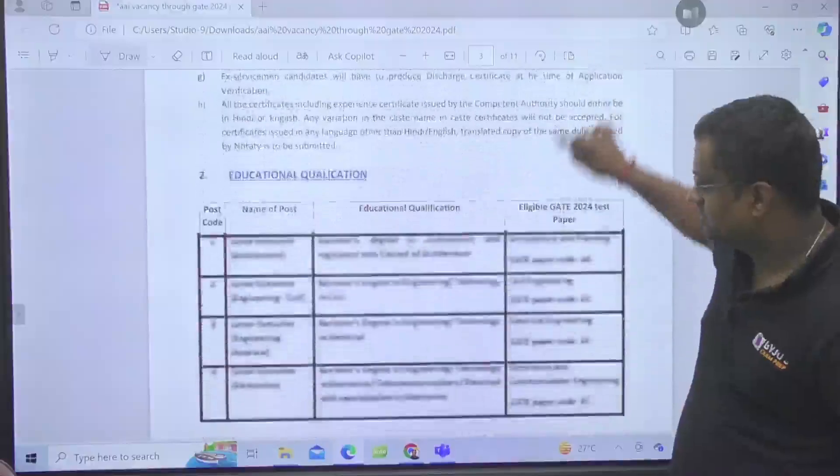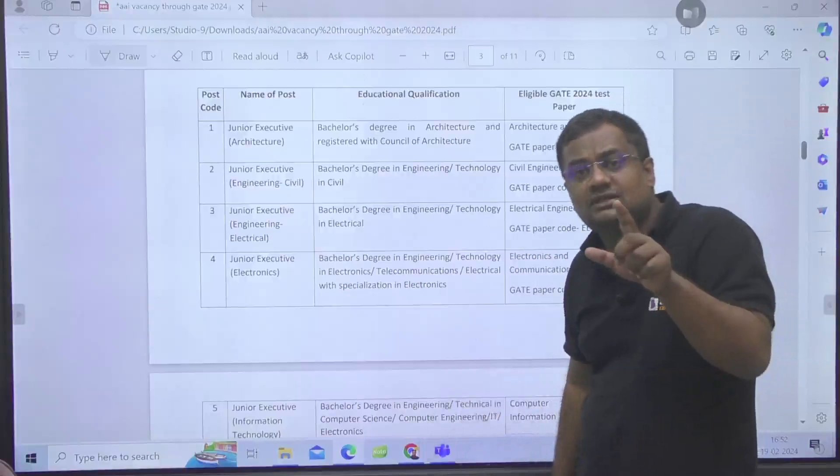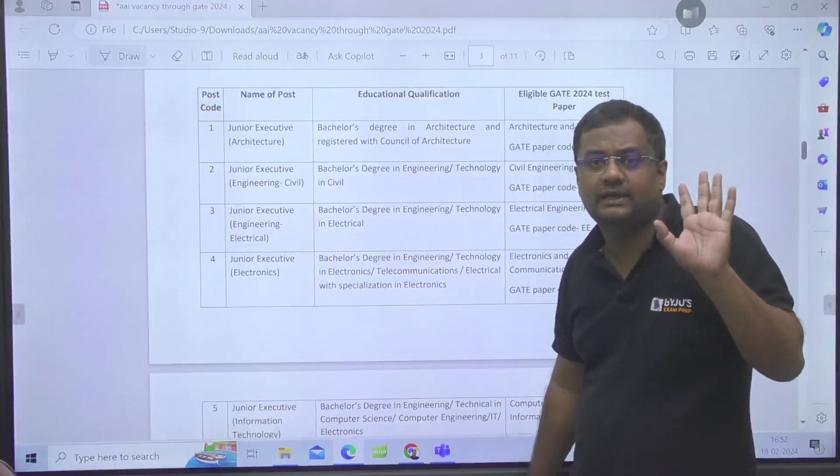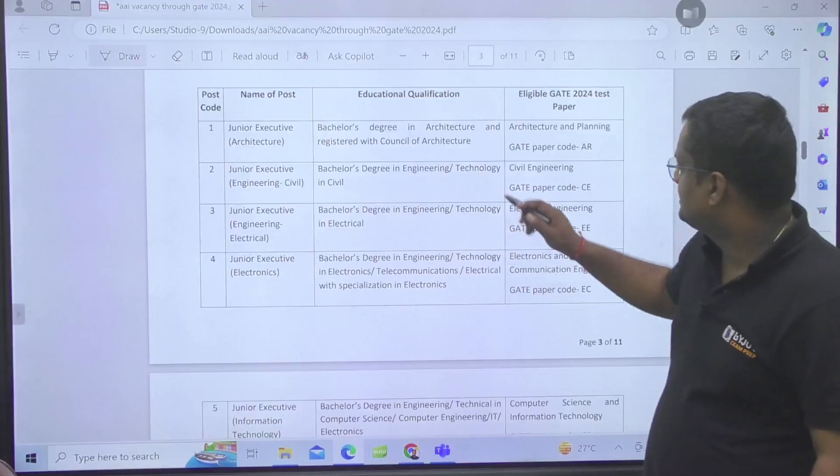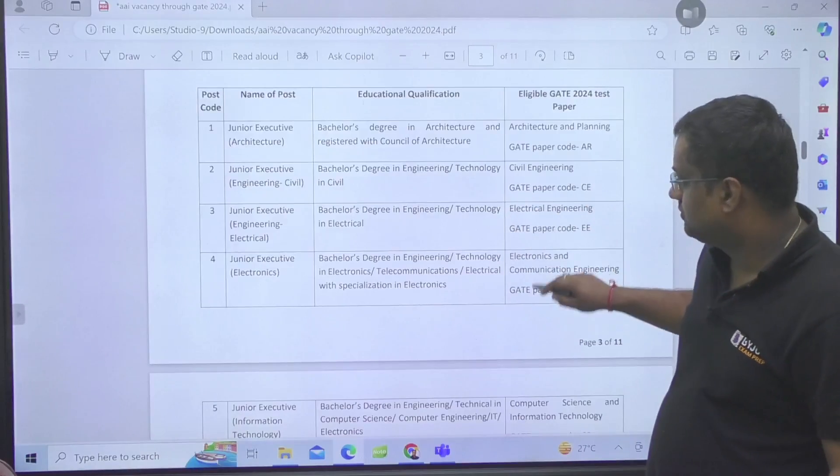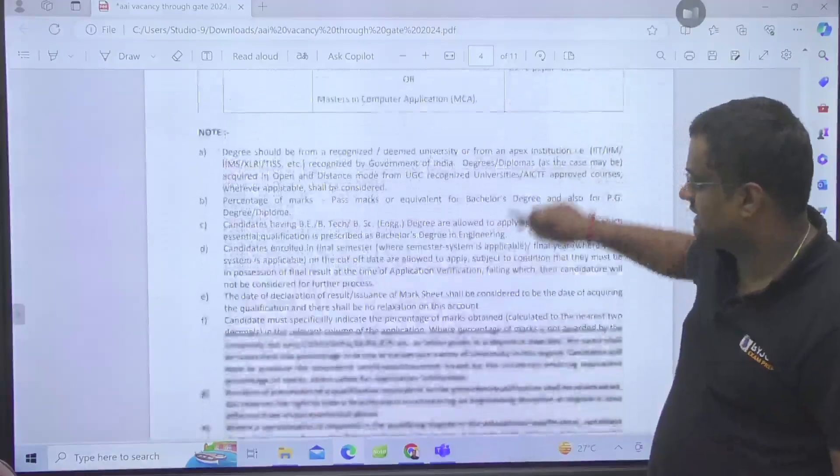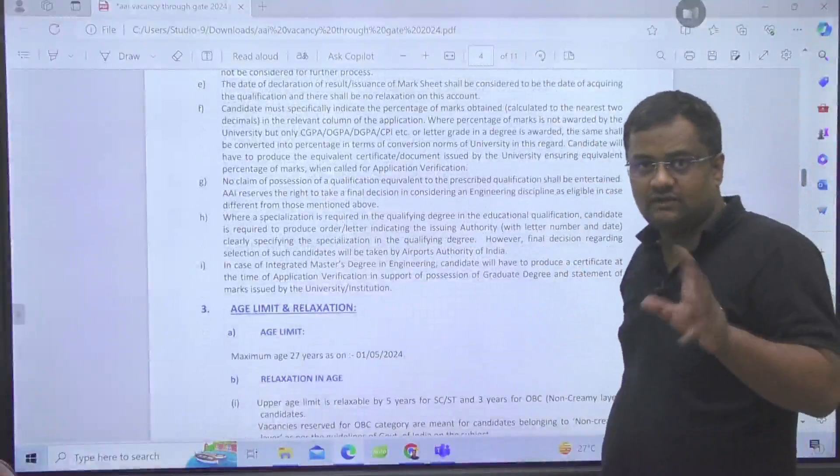The eligibility is that you have done B.Tech or final year is eligible. Your rank will be judged only in the primary paper in which you have done your B.Tech, secondary paper will not be considered. In terms of tie, if the gate score is tied then the student who is having older age will be preferred.